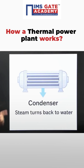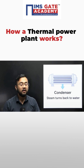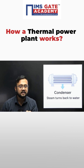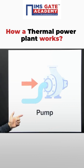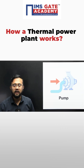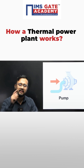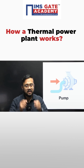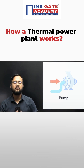From the turbine, steam enters into the condenser which converts the steam back into water. From the condenser, it enters into the pump, and the pump increases the water pressure. Then finally it is sent back to the boiler, where it converts into steam again and the whole cycle continues. Based on this cycle, the thermal power plant works.